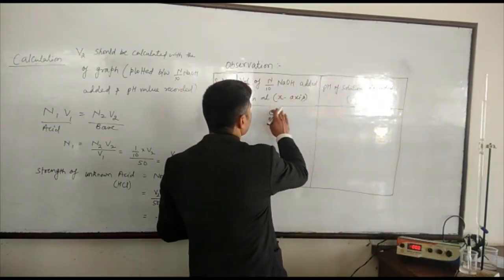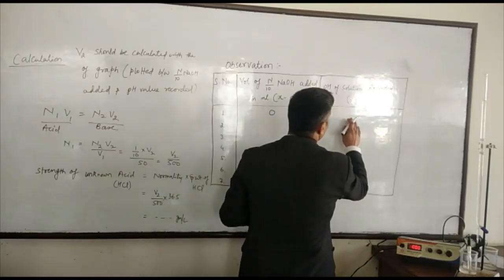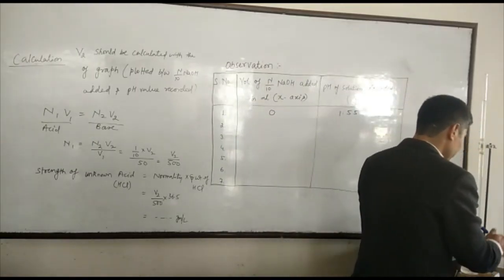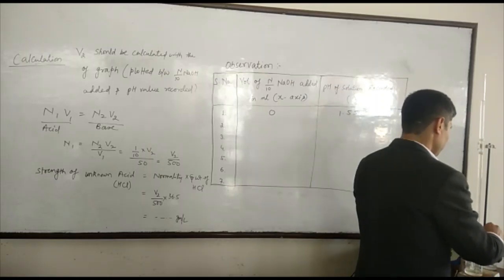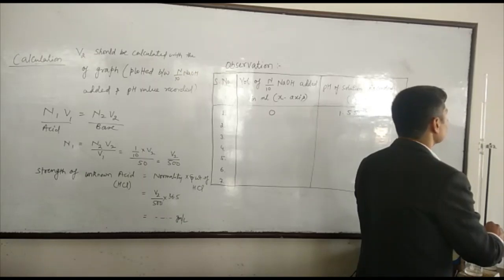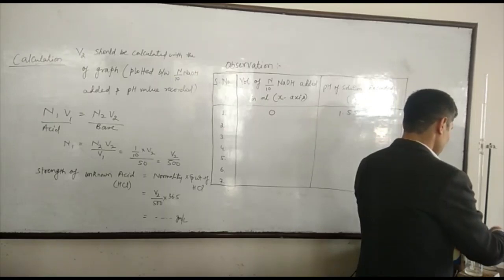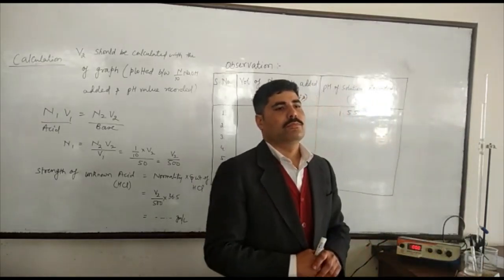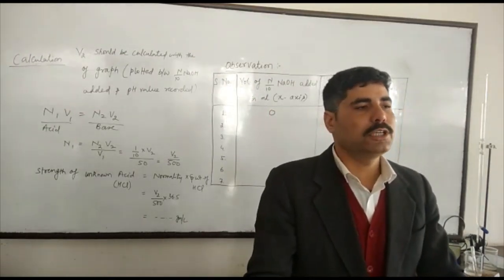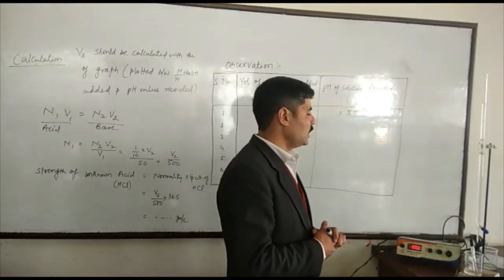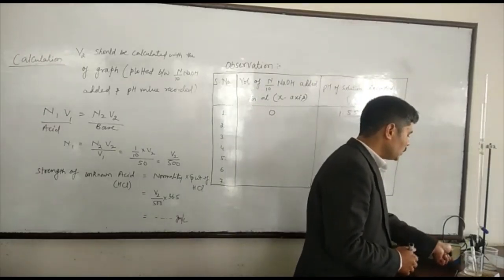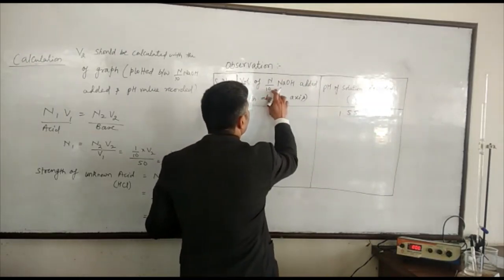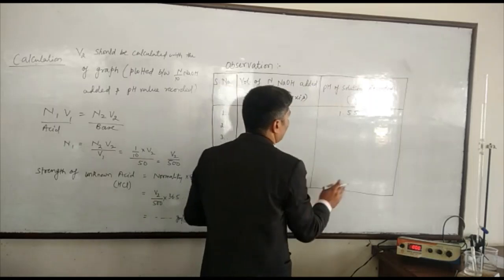The volume of NaOH added is 0 mL at the start, and the pH of the solution recorded is 1.55. Now we add 1 mL of NaOH to the solution and note down the readings in the observation table. After adding 1 mL of NaOH, the pH of the solution is now 1.85. So at volume 1 mL, the reading is 1.85.